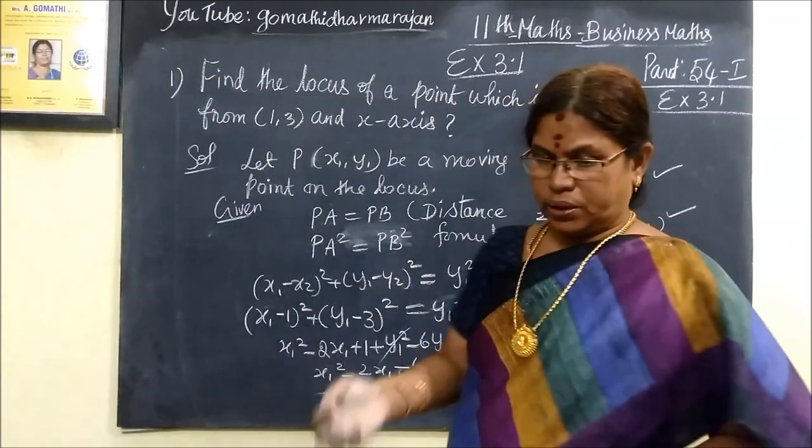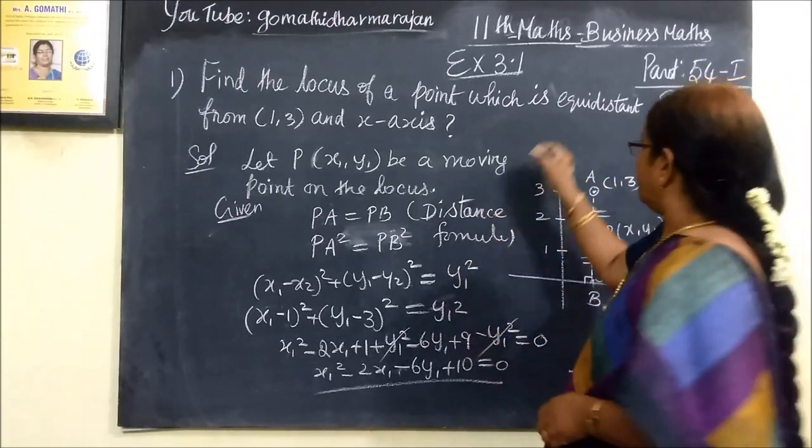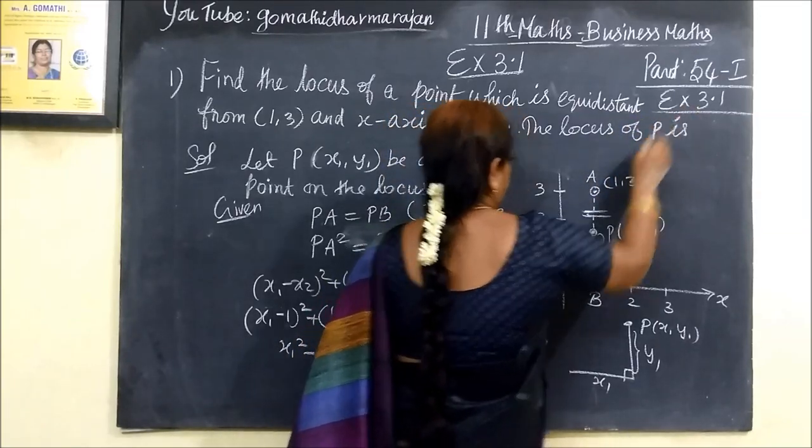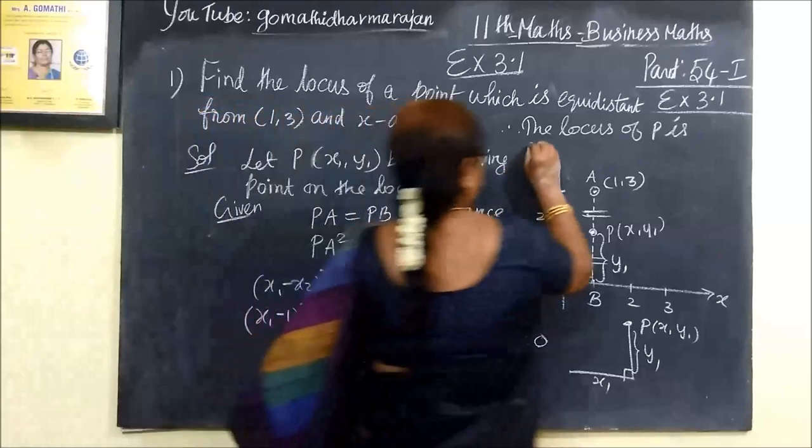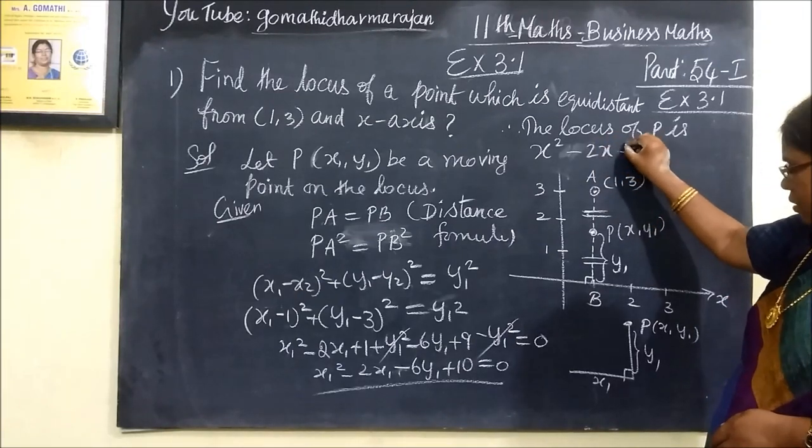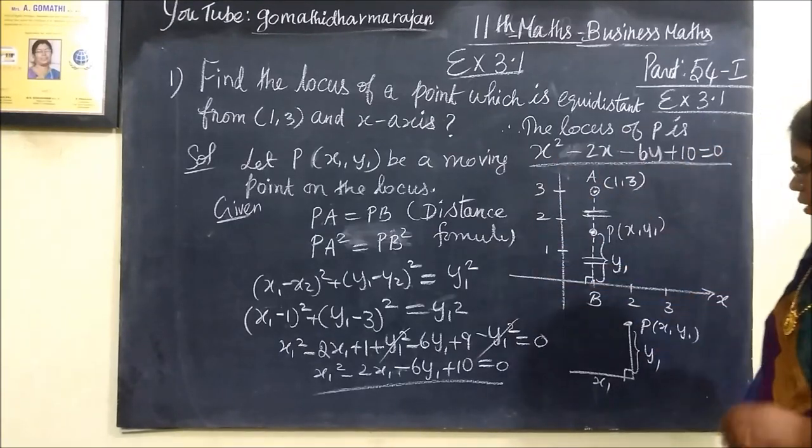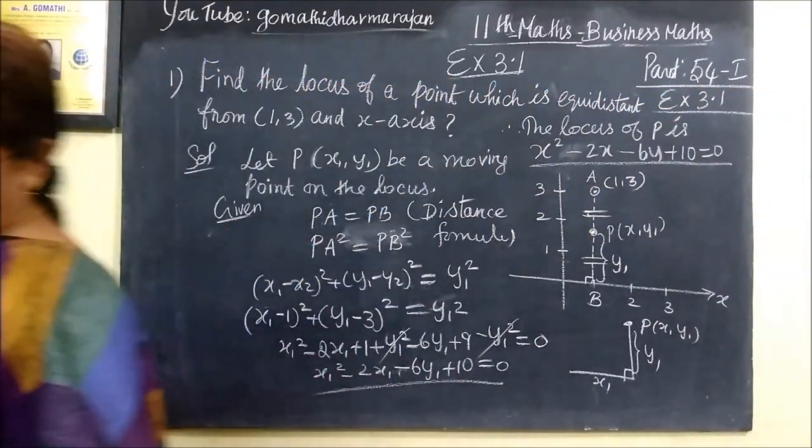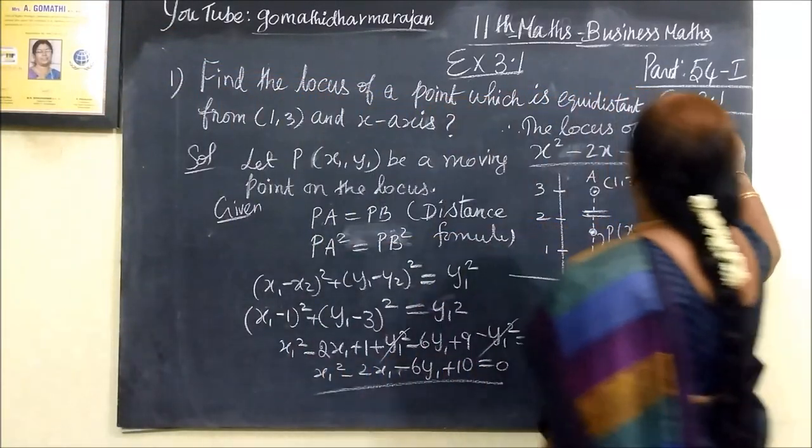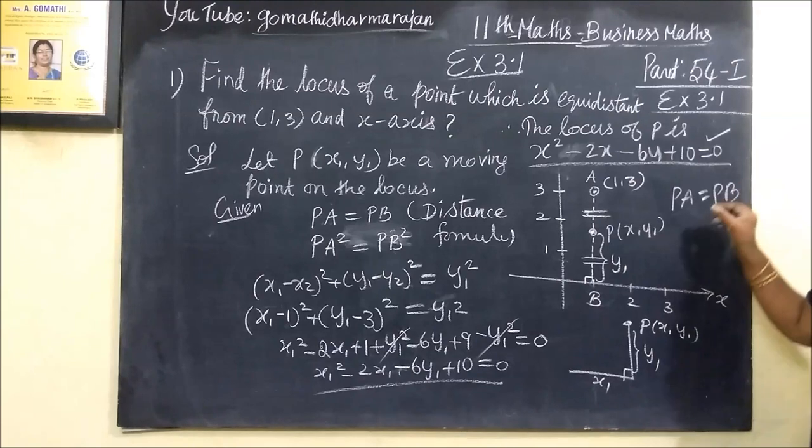That was the locus. If you have the locus of P, then x1 equals y1 equals 0. Therefore, the locus of P is x square minus 2x minus 6y plus 10 equals 0. So this is correct. In the order of this, you have to write this. PA equals PB. That is what I have to write.